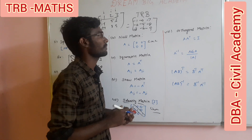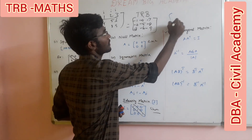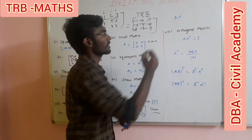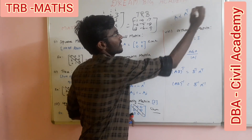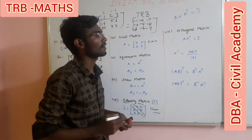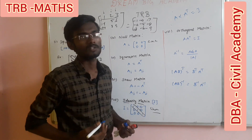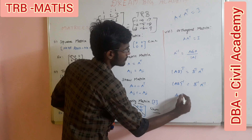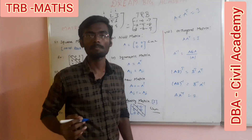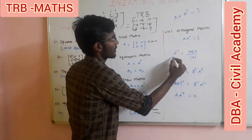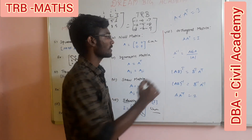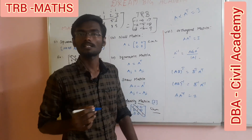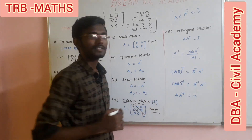Next is the orthogonal matrix. For an orthogonal matrix, A multiplied by A transpose equals the identity matrix. The next video will cover additional properties.